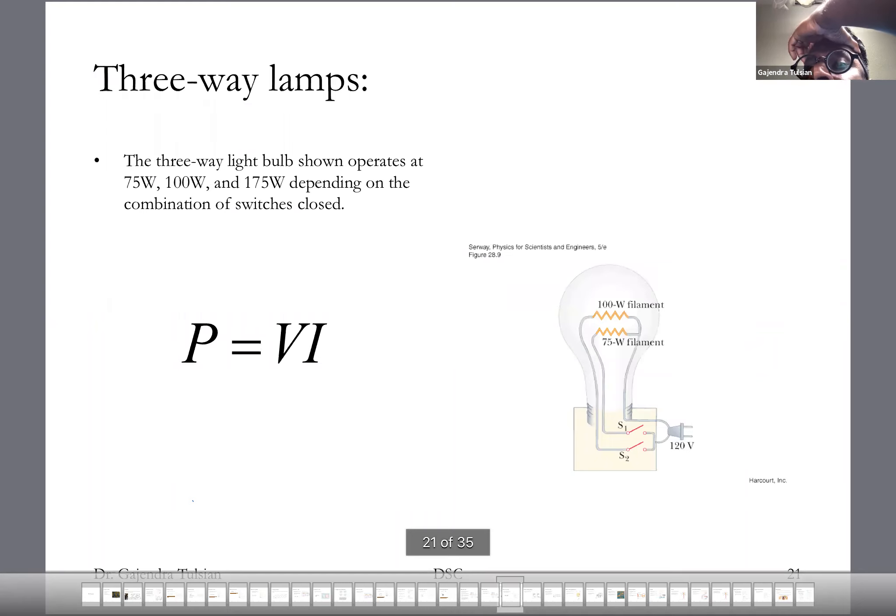So here's a three-way lamp. You guys might have used these. So when you close this switch, this filament lights up and that's a 75 watts filament. And then on the next setting, you'll open this and close this switch and this 100 watt filament lights up. And then on the next round, you will close both of these and this bulb will light up as a 175 watt bulb. So depending on the position of the switches, this can light up as a 75 watt, 100 watt, or 175 watt bulb. Okay. So that's how this thing works.